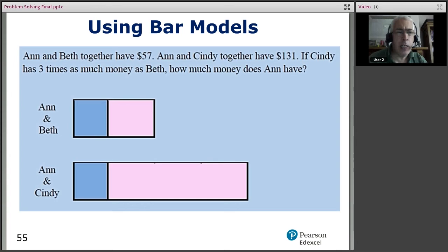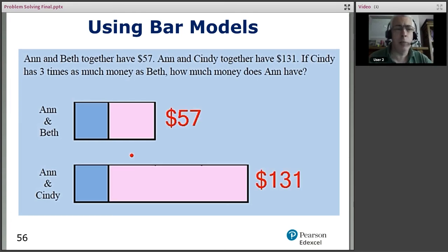But if you look here, that's why I've used the two different colours. So Ann is blue, and Cindy and Beth are pink. But I've used pink for Beth and Cindy because there's a relationship between Beth and Cindy. So you can see that one pink bar, the Cindy one, the bottom one, is three times the length of the other one.